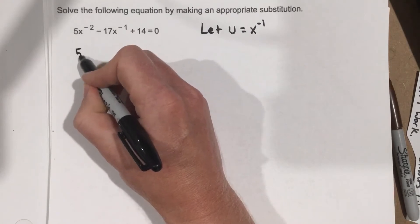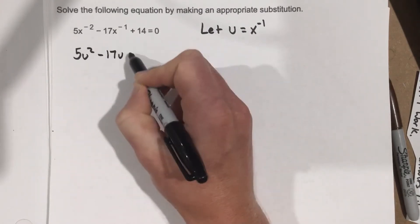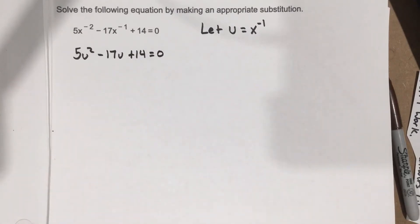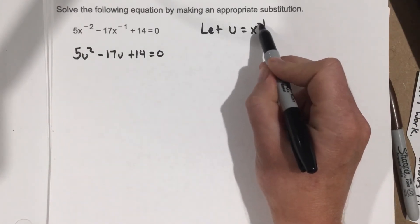So I'm going to end up being able to write this as 5u squared minus 17u plus 14 equals 0. And I didn't change the equation per se, I just said let's let a different variable equal x to the negative 1 for now.